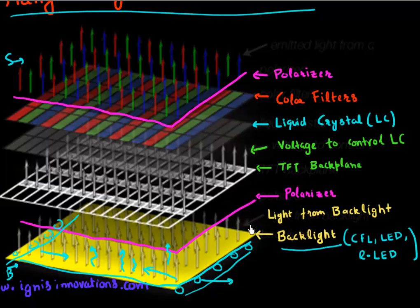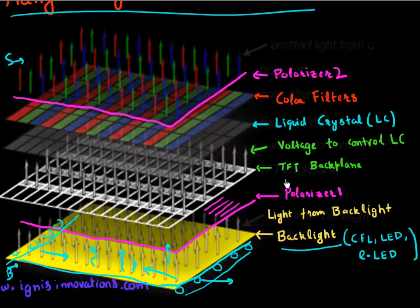This light from the backlight is then first passed through the polarizer. Note that there are two polarizers — polarizer one towards the bottom and polarizer two above. The very first polarizer polarizes the light in one particular polarization. Then this light has to pass through the thin film transistor backplane, or TFT backplane.